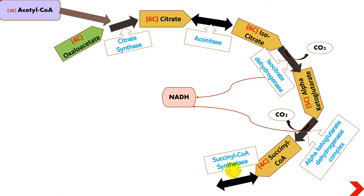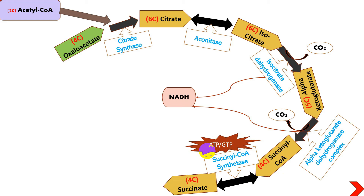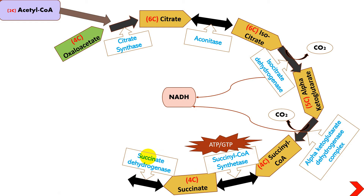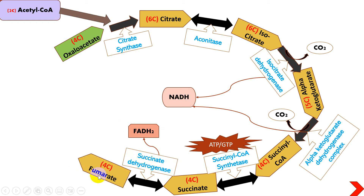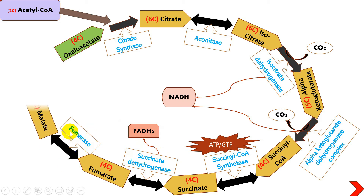Succinyl-CoA is further acted upon by succinyl-CoA synthetase enzyme, and with the release of one ATP or GTP molecule — a substrate-level phosphorylation process — it is converted into succinate. Succinate is then acted upon by succinate dehydrogenase, which this time produces an FADH₂ molecule. This FADH₂ will be transferred to the electron transport chain, where it will yield two ATPs. Succinate is thereby converted into fumarate.